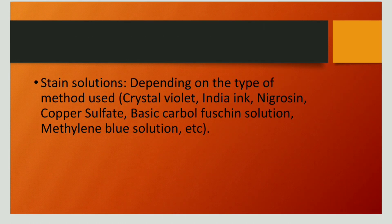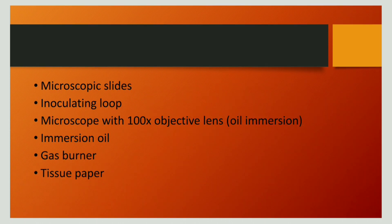The stains used for capsule staining depend upon the method chosen. The stains include crystal violet, India ink, nigrosin, copper sulfate, basic carbol fuchsin, and methylene blue. Apart from the stains, we also require slides, an inoculating loop, a microscope with a 100x objective lens (oil immersion), immersion oil, a gas burner, and tissue paper.